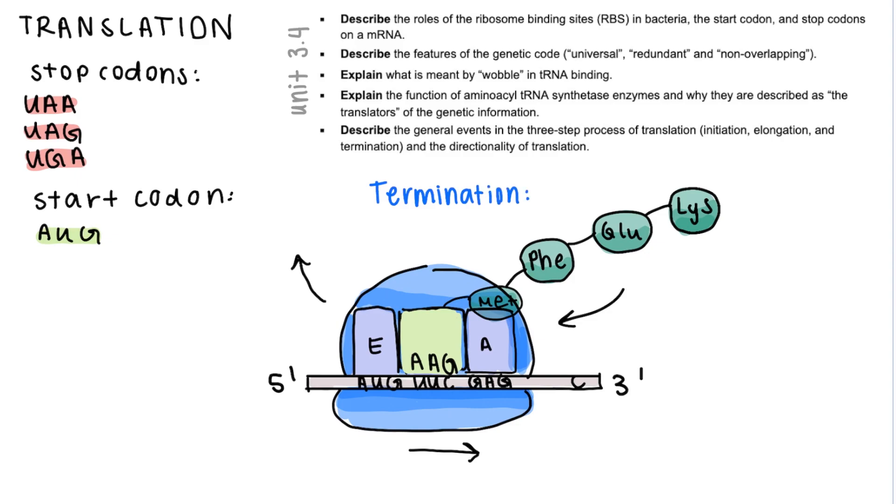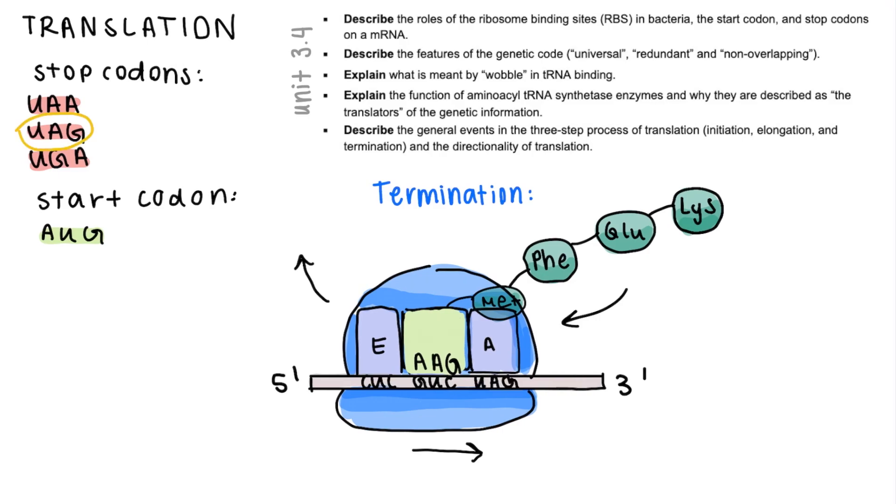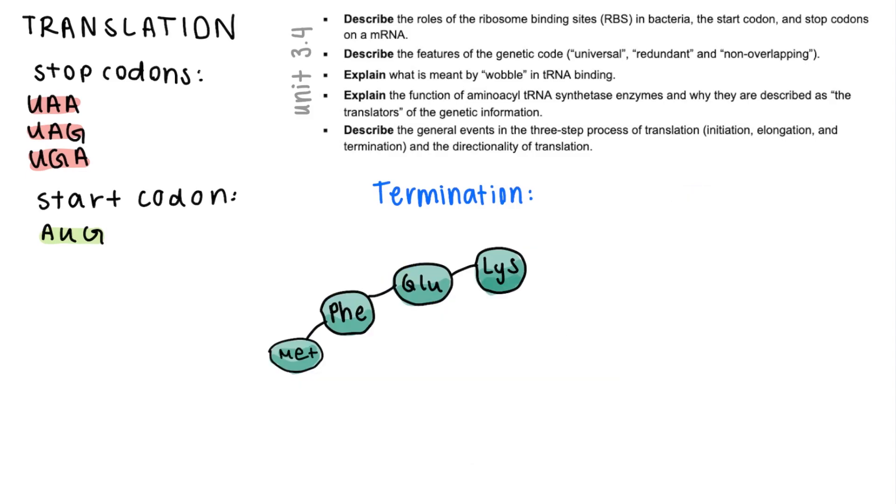Then, as the ribosome moves along, when it encounters one of the stop codons which is UAA, UAG or UGA, a tRNA will come which has no amino acid attached to it. This means that when it moves to the P site there will be no bond transfer and the amino acid chain will not be able to be further elongated. So at this point the amino acid chain is complete. This marks the end of translation and the end of the biological information flow as a whole for this gene.